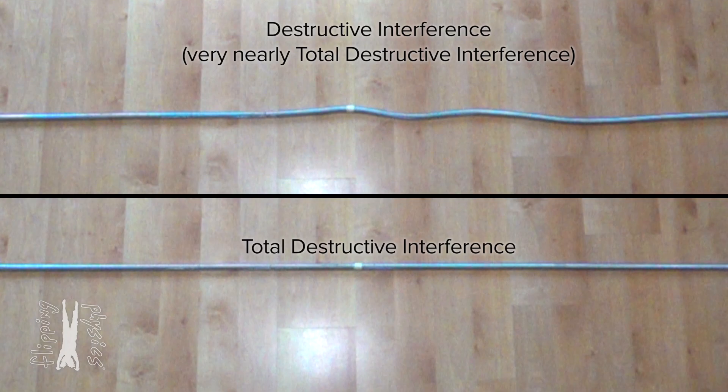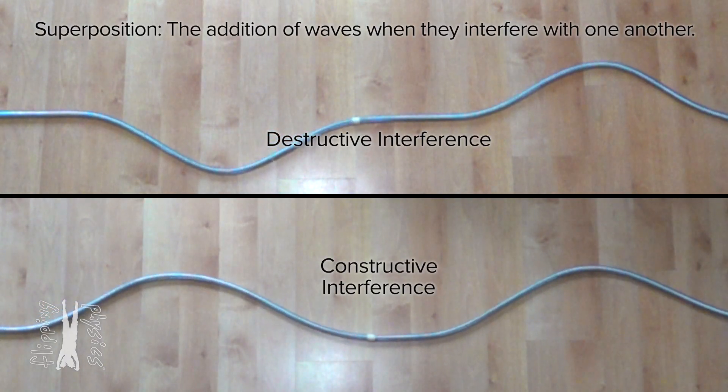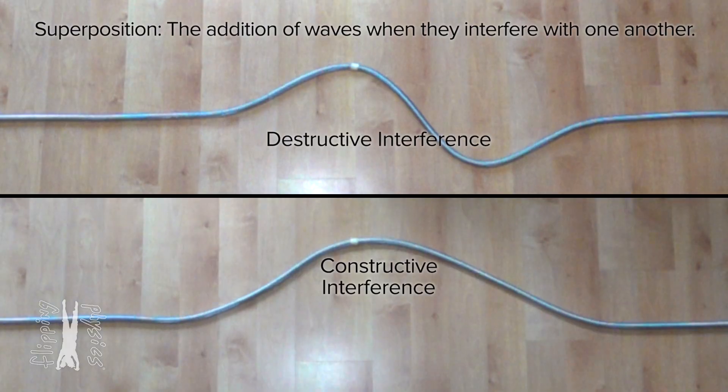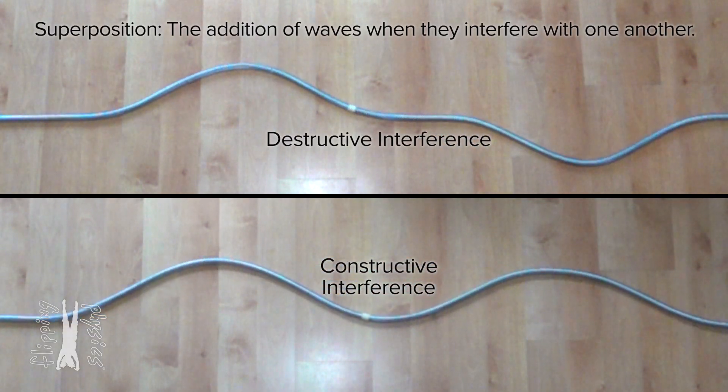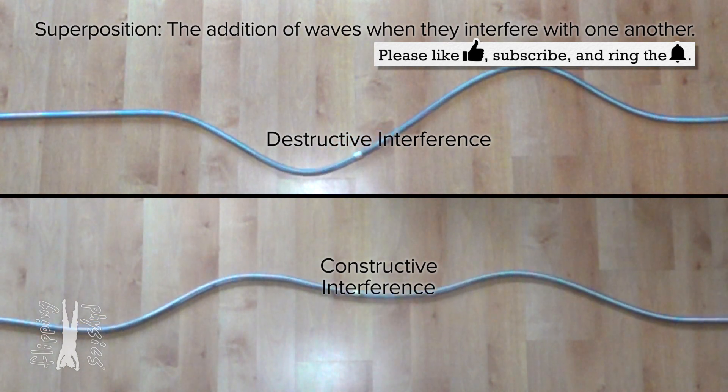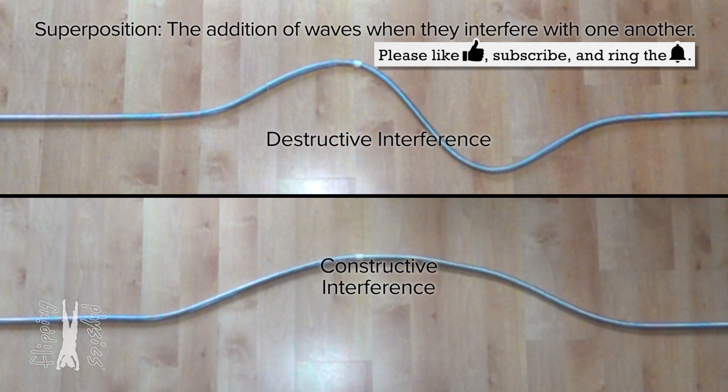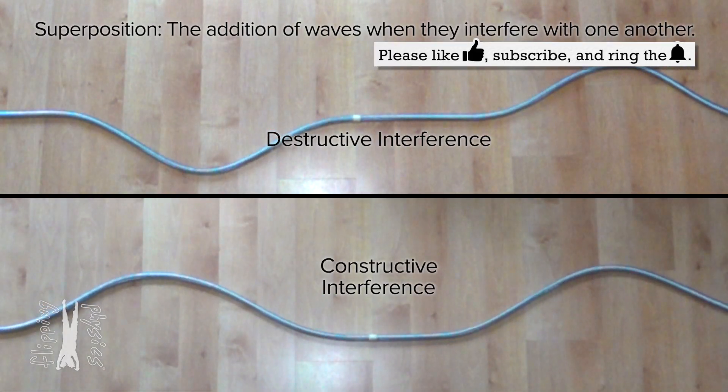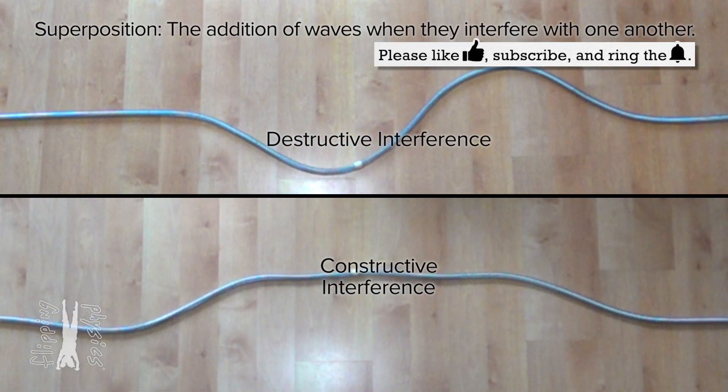So there you have it. Because waves are not objects, they do not run into one another. Instead, waves interfere with one another via superposition and more specifically, they can constructively and destructively interfere with one another. And after they occupy the same space, they continue on as if they had never interfered with one another.